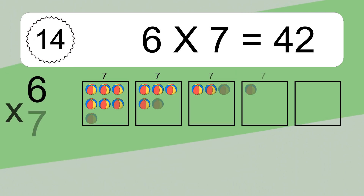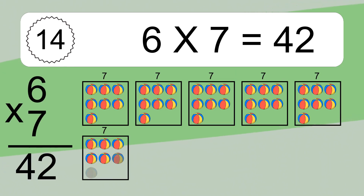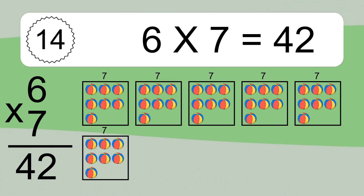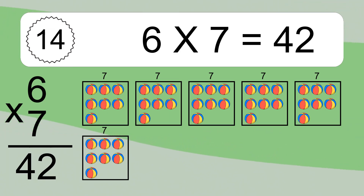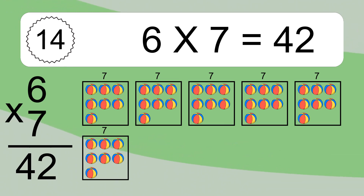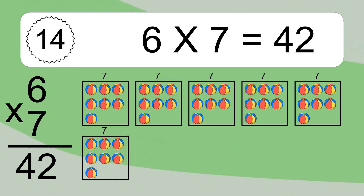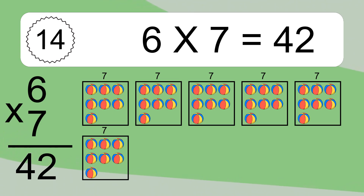6 times 7 equals what? 6 times 7 equals 42. We have 6 boxes, and each box has 7 colorful balls inside. If you count all the balls in all the boxes together, you will have 6 times 7 balls. This equals 42 balls.